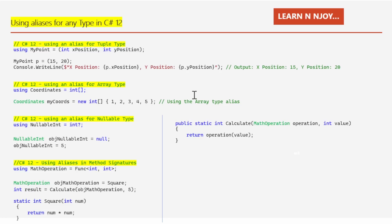One key use case is aliasing a tuple type. Tuples are a powerful feature in C# that allow us to group multiple values together. However, the syntax can sometimes be complex. With aliases, we can simplify this: 'using MyPoint = (int XPosition, int YPosition)'. Then we write 'MyPoint p = (15, 20)' and use 'p.XPosition' and 'p.YPosition' to print the values. Whenever we need to work with this tuple type, we simply use the alias MyPoint, making the code more intuitive.